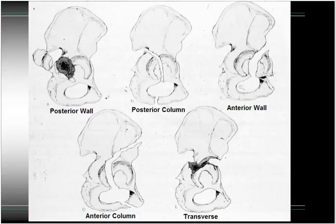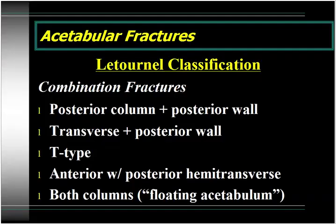Here's a posterior wall fracture, here's a posterior column fracture. Notice that as we go through these diagrams, whenever you have a fracture involving the posterior column, it always exits somewhere into the greater sciatic notch. Here's an anterior wall fracture, which is actually quite rare. Anterior column fracture is a little bit more common. And the transverse fracture is a common pattern. The combination fractures consist of posterior column plus posterior wall, and transverse plus posterior wall, which is the most common associated type acetabular fracture.